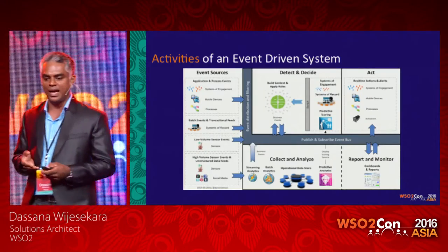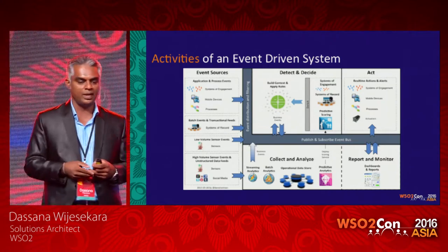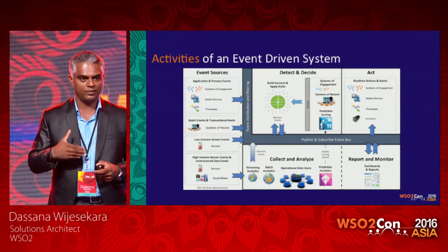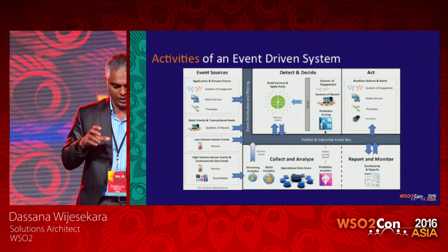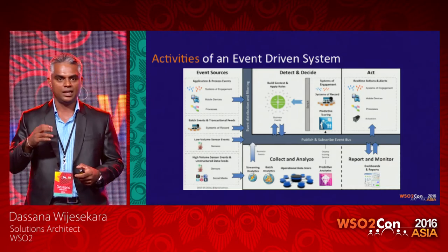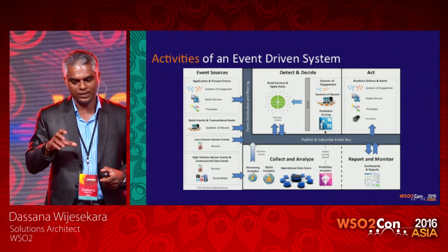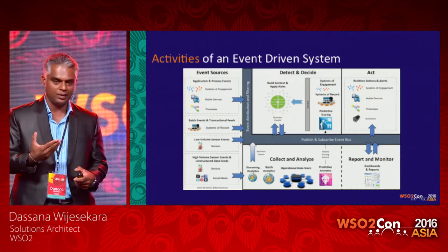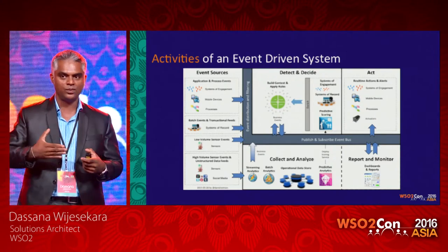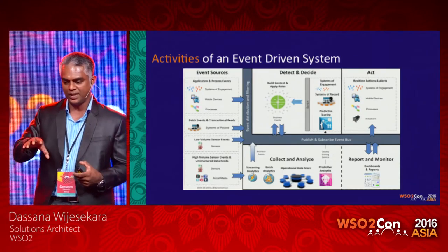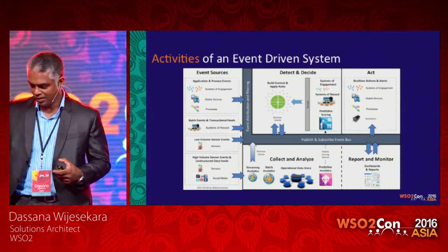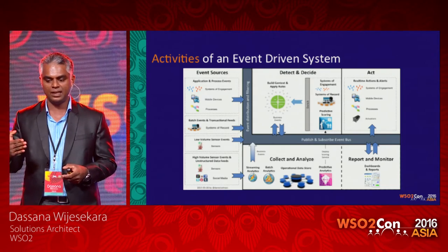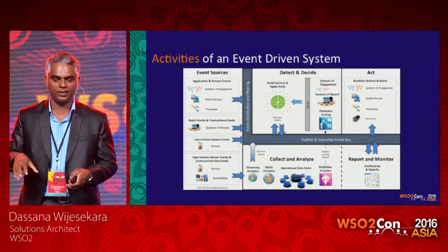Looking at the activities of an event-driven system: first are event sources — batch events and real-time events. These events are detected and filtered using different filter patterns in the detect-and-decide block. Then we collect, analyze, and transform event information into information and wisdom, sending it to consumers that act on it. There are also monitoring capabilities and reporting bound to the entire event-driven ecosystem.